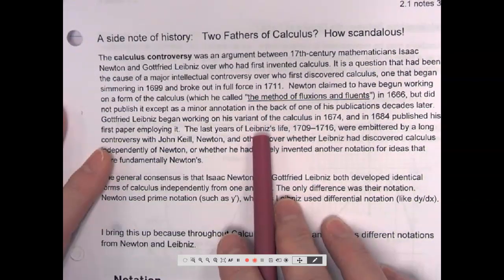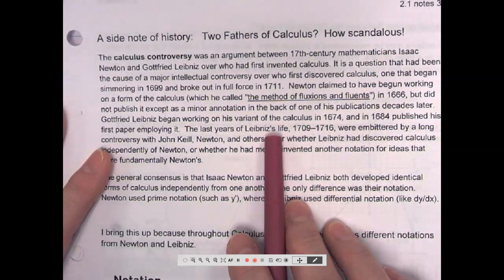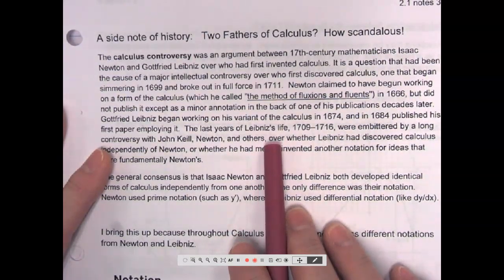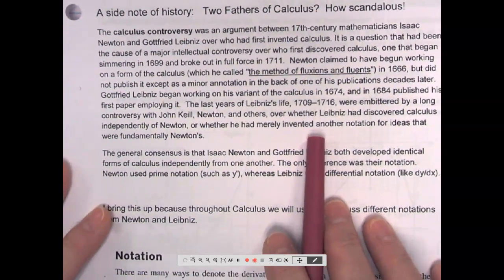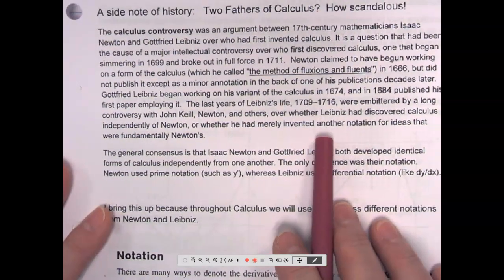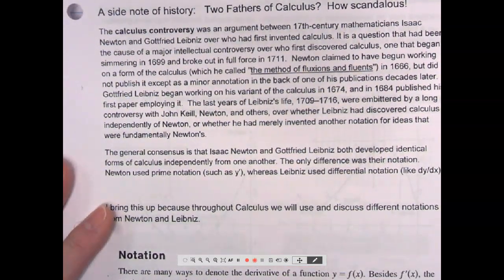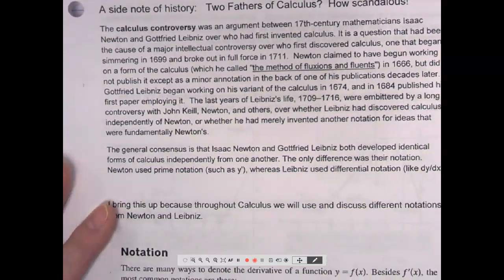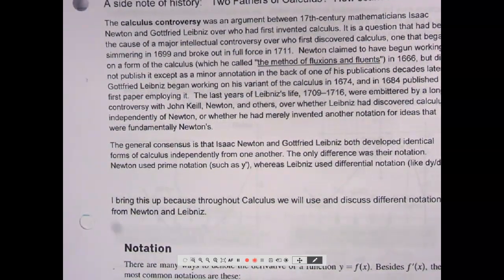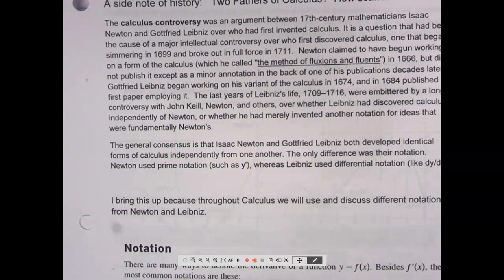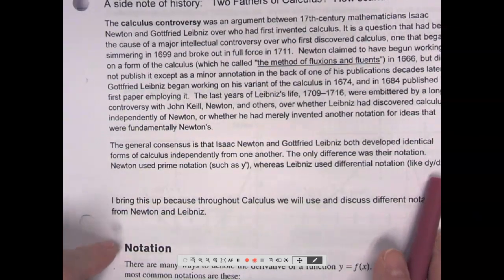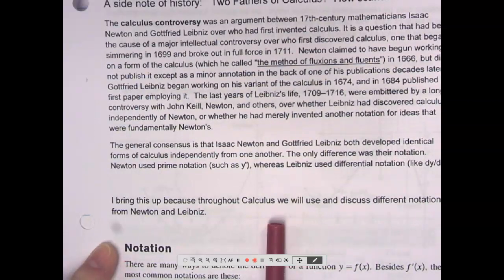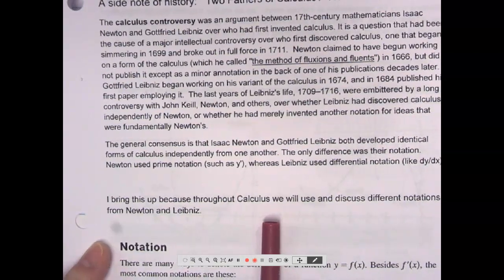Gottfried Leibniz began working on his variant in 1674, and in 1684 published his first paper employing it. The last years of Leibniz's life, 1709 to 1716, were embittered by a long controversy with John Keel, Newton, and others over whether Leibniz had discovered calculus independently of Newton, or whether he had merely invented another notation for ideas that were fundamentally Newton's. The general consensus is that Isaac Newton and Gottfried Leibniz both developed identical forms of calculus independently from one another. The only difference was their notation. Newton used the prime notation, like we just looked at, f prime, whereas Leibniz used differential notation like dy over dx.